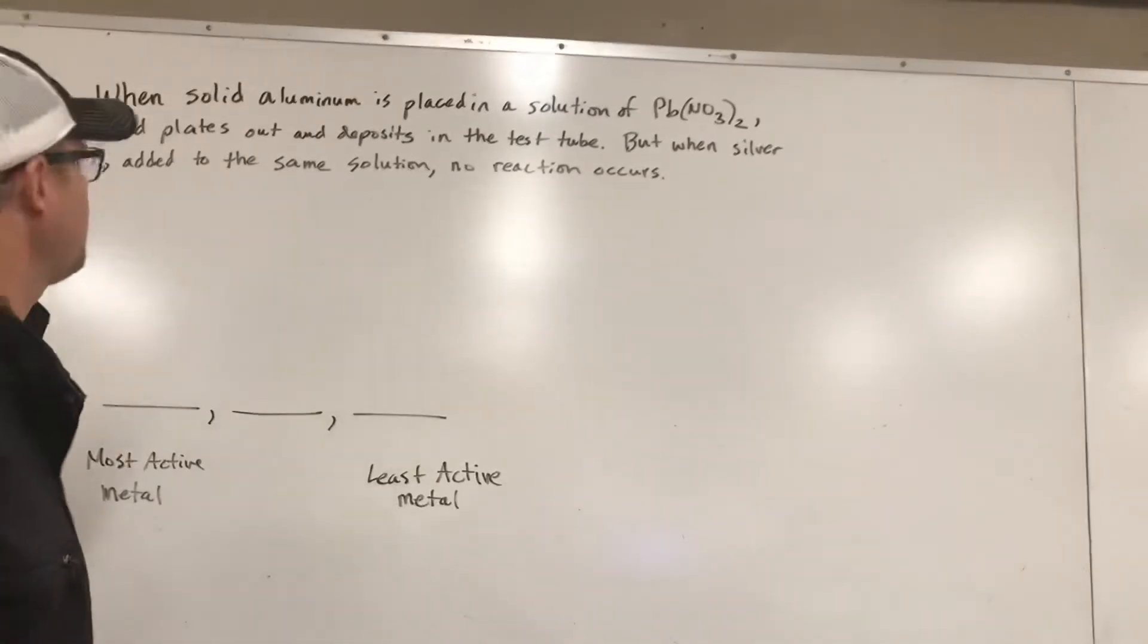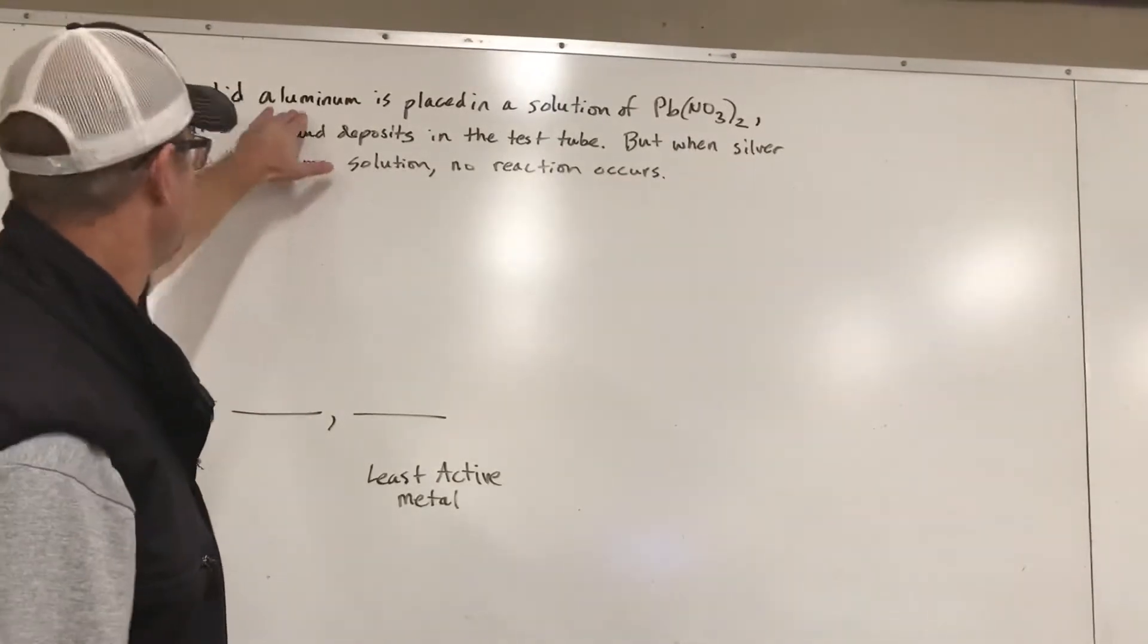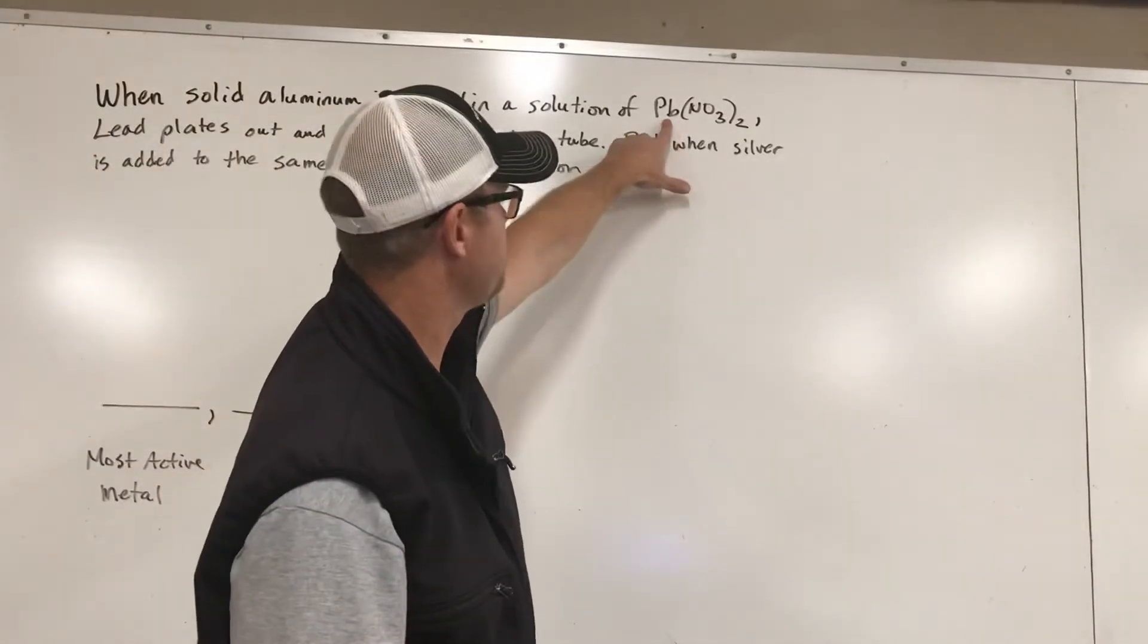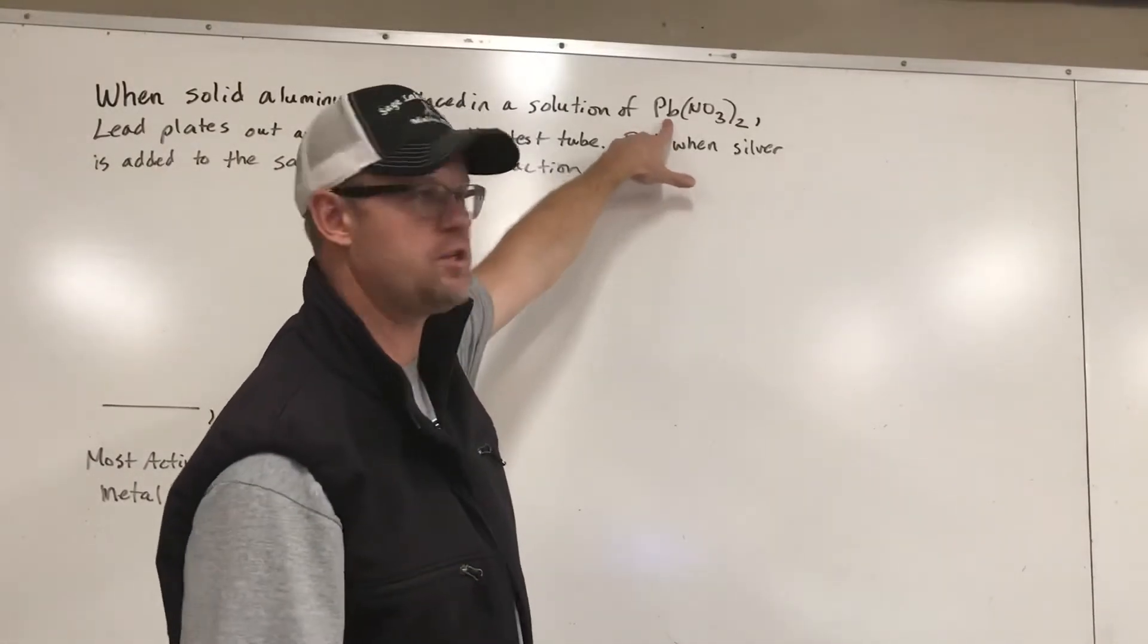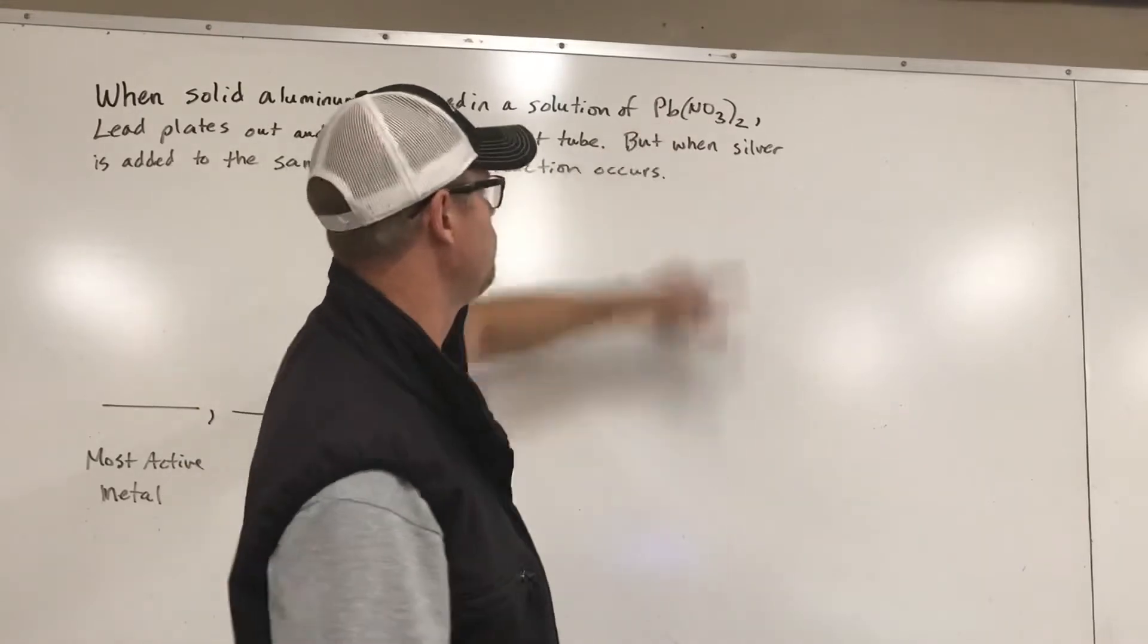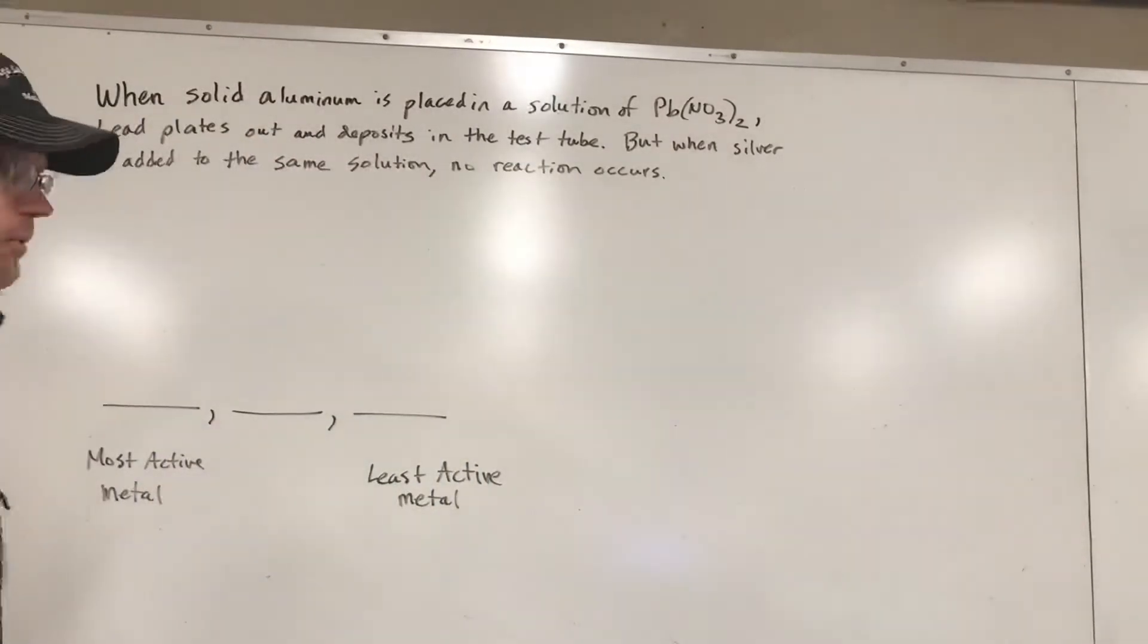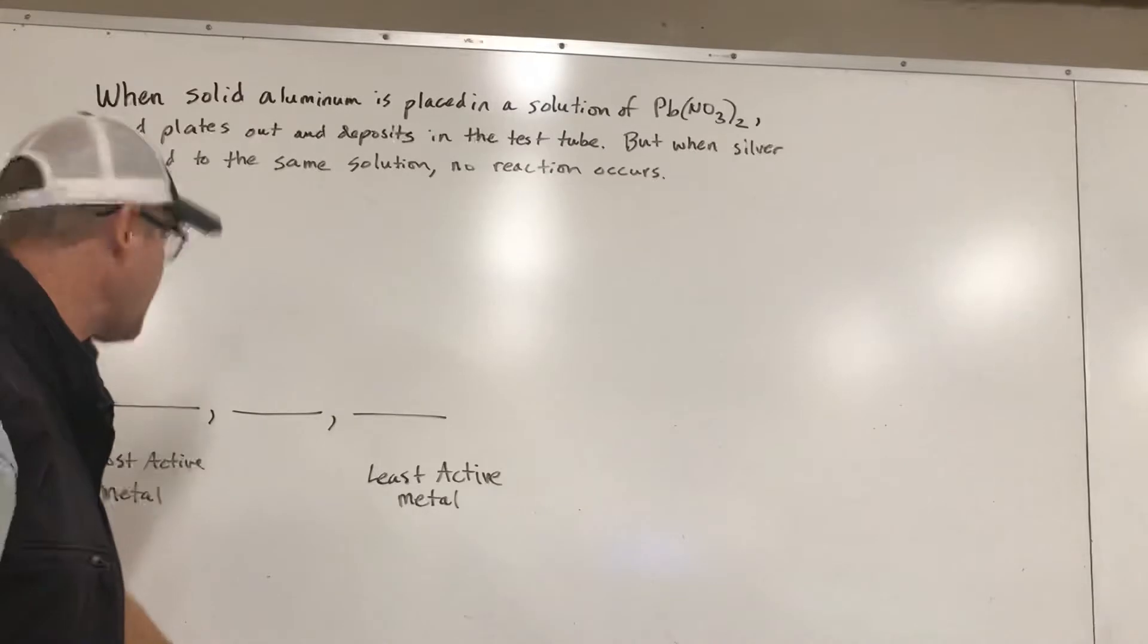We actually have three metals to look at. We've got solid aluminum, we've got solid silver, and then we also have lead ions that are in this solution. So they're still a metal, they just start in solution form as opposed to a solid neutral metal. So let's first get some reactions to take a look at.